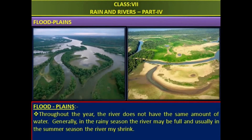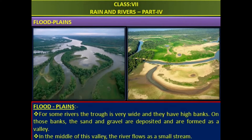Throughout the year, the river does not have the same amount of water. Generally, in the rainy season the river may be full, and usually in the summer season the river may shrink. For some rivers, the trough is very wide and they have high banks. On those banks, sand and gravel are deposited and are formed as a valley. In the middle of this valley, the river flows as a small stream.